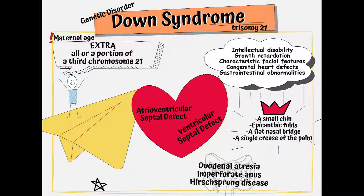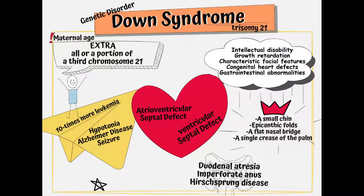People with Down syndrome are more likely to develop leukemia. Hypotonia is a common feature of children with Down syndrome. Down syndrome is also linked to a decreased brain volume, particularly evident in the hippocampus and cerebellum, and the potential for developing early Alzheimer's disease is significant.